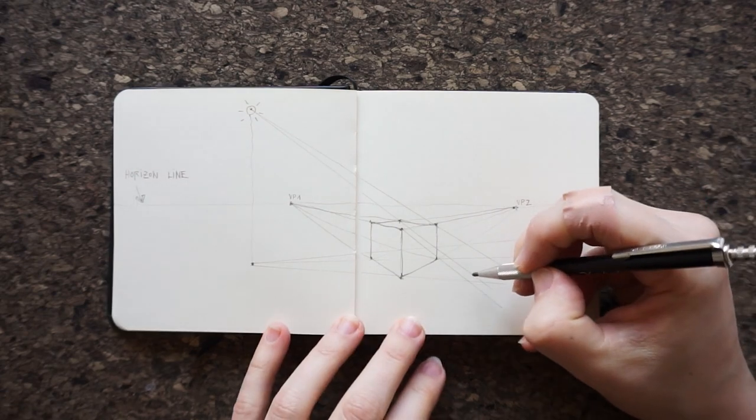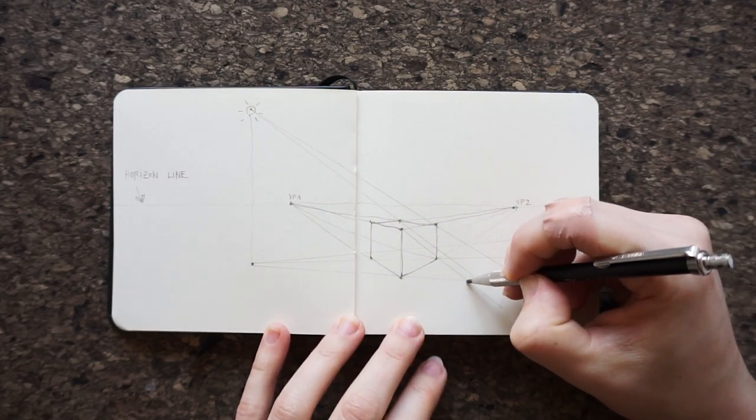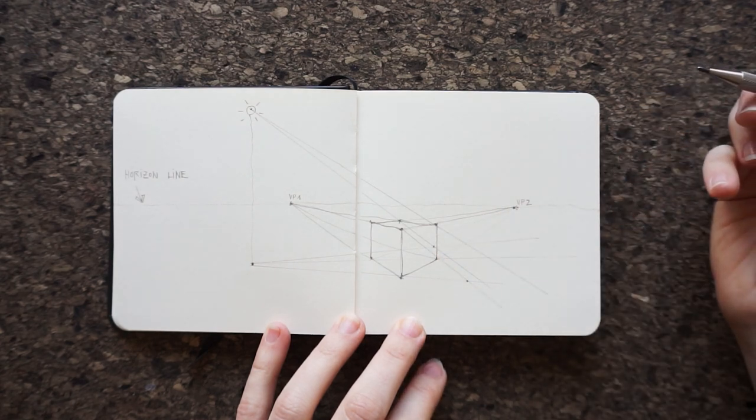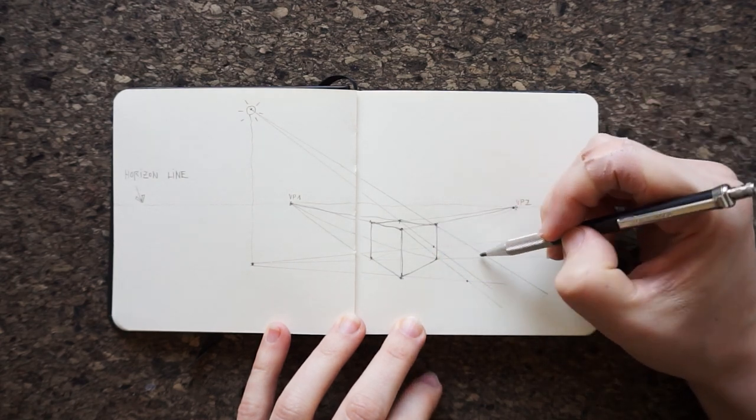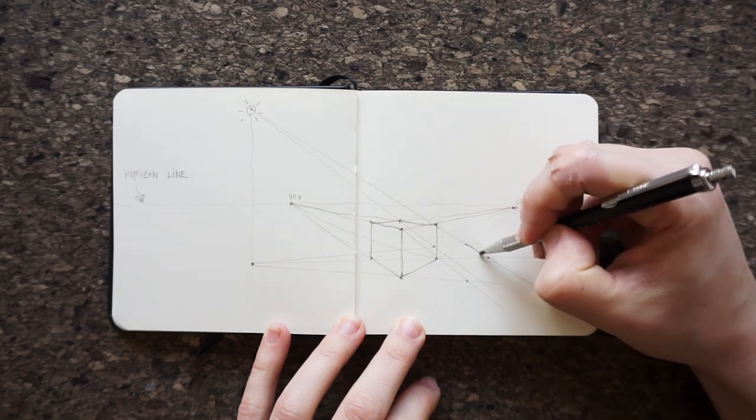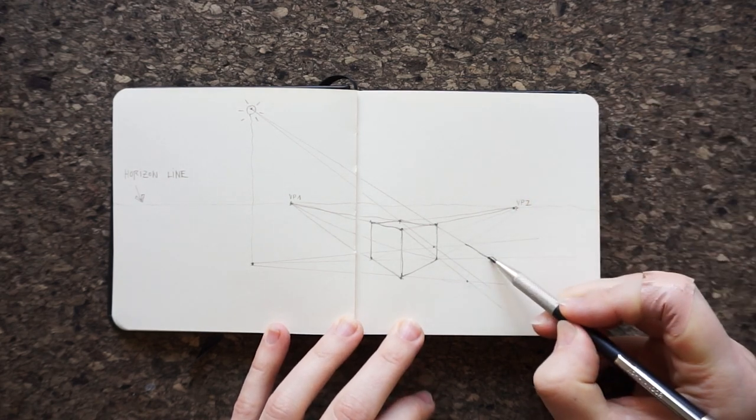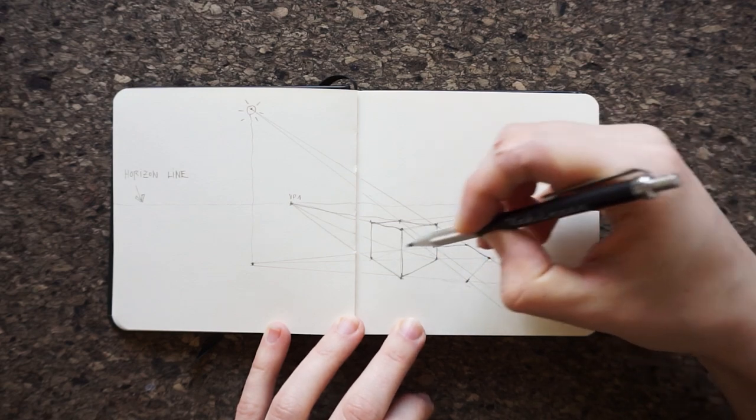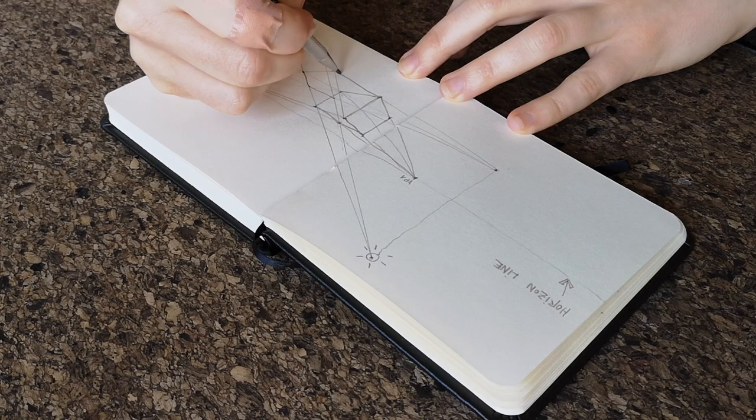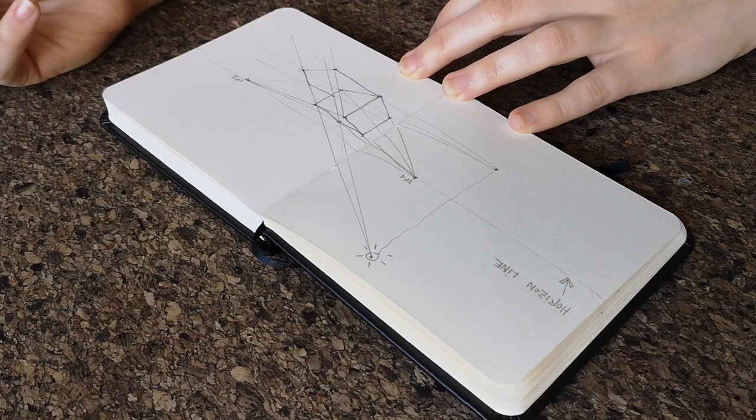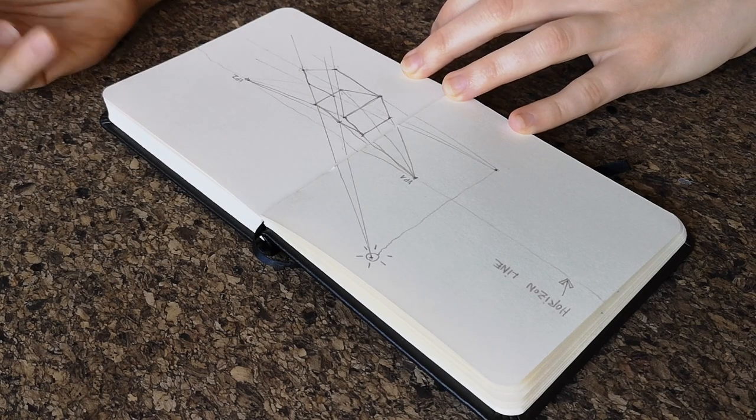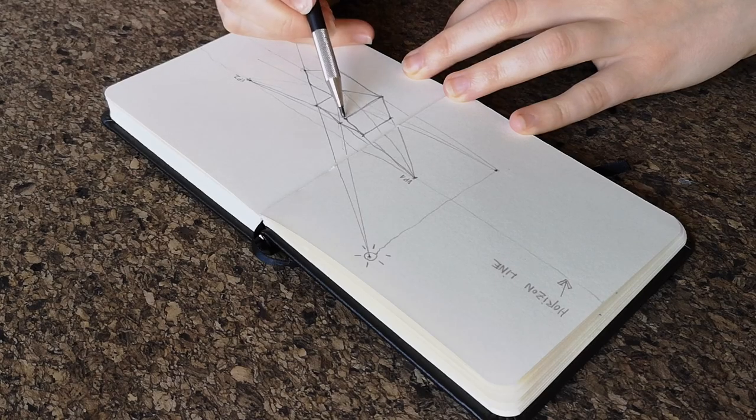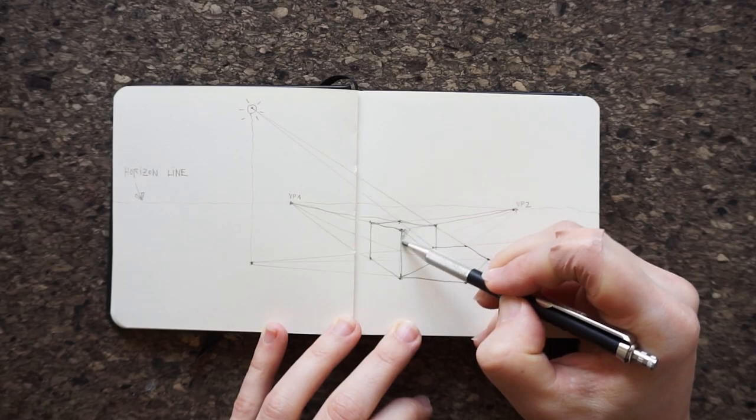Now look for points where construction lines going through the top and the bottom of the single cube edge intersect. There should be three of them, one for each edge. Still with me? Connect these three points with each other with straight lines. Then connect the bottom point and the top point with the bottom of the edges they originate from. Congratulations! This is the outline of the cast shadow.